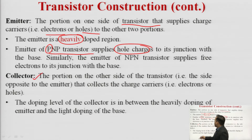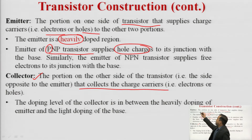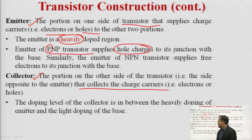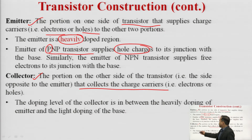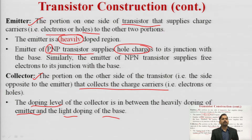The collector is the portion on the other side of the transistor; it collects the charge carriers transmitted by the emitter. The collector collects electrons for NPN and holes for PNP. The doping level of the collector is moderate — somewhere between the heavily doped emitter and the lightly doped base.